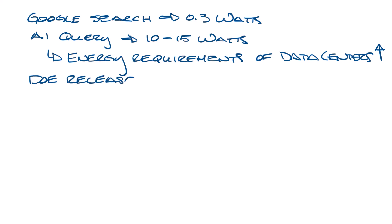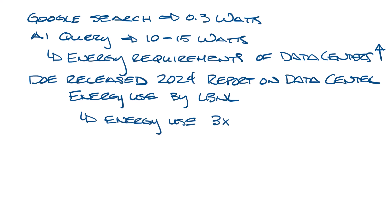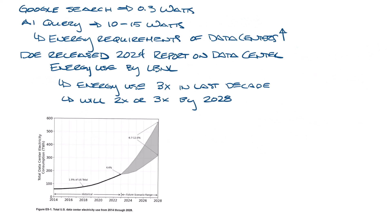In December of 2024, the Department of Energy released the 2024 report on U.S. data center energy use produced by the Lawrence Berkeley National Laboratory. It said that data energy use had tripled in the last decade and will double or triple by 2028. This chart shows the data center energy use trend. It went from being about 2% of the U.S. electricity usage to almost four and a half percent and it's expected to be between 6.7 and 12% in three years.